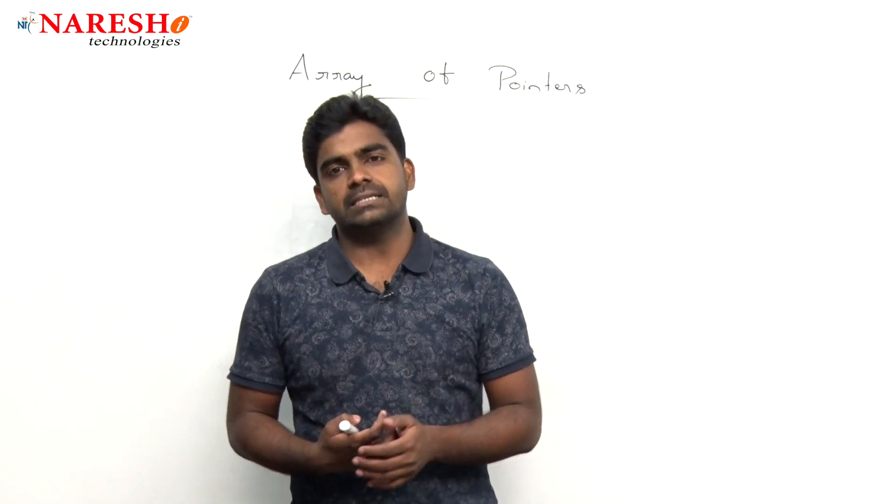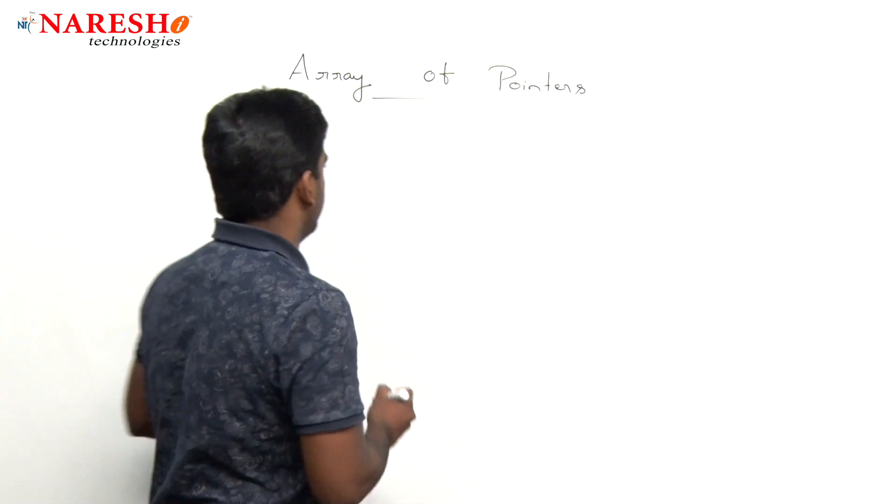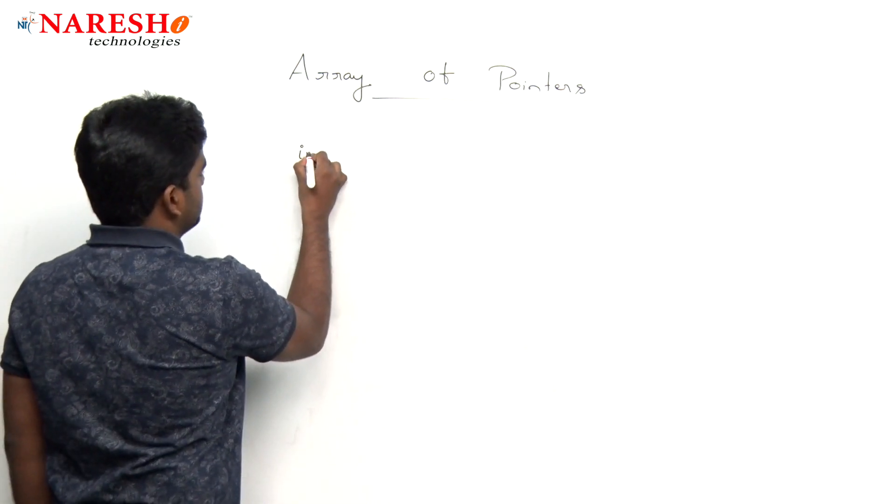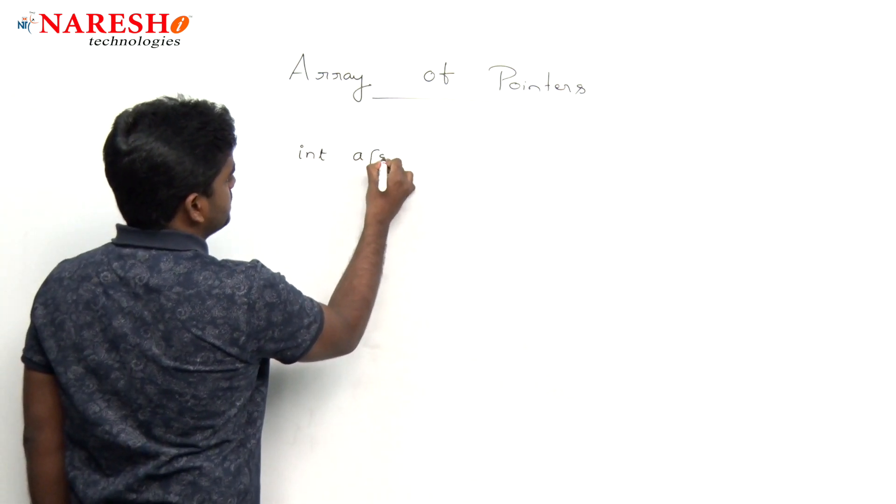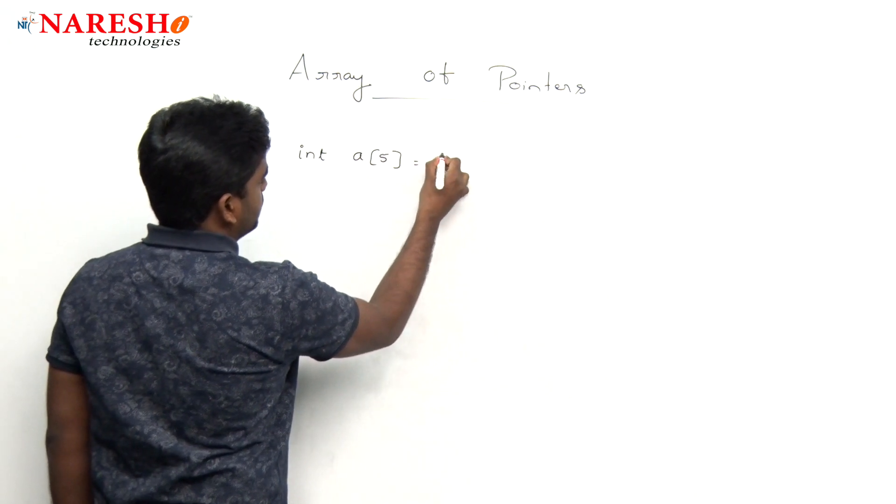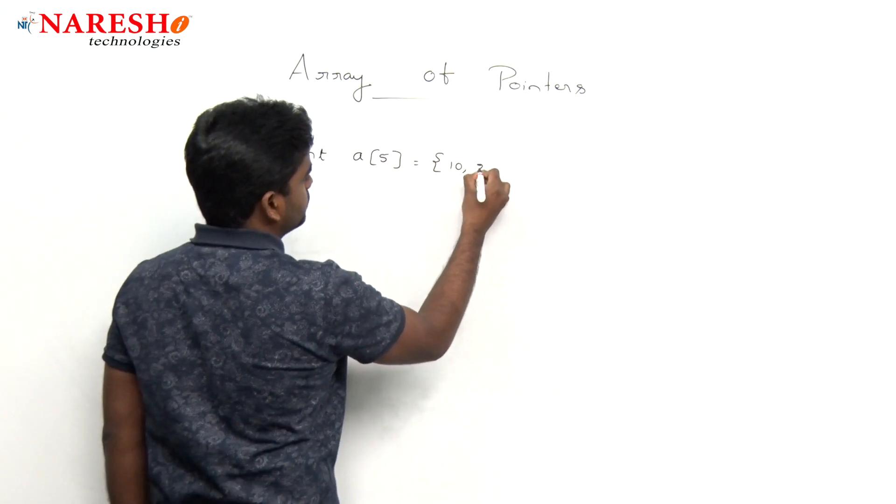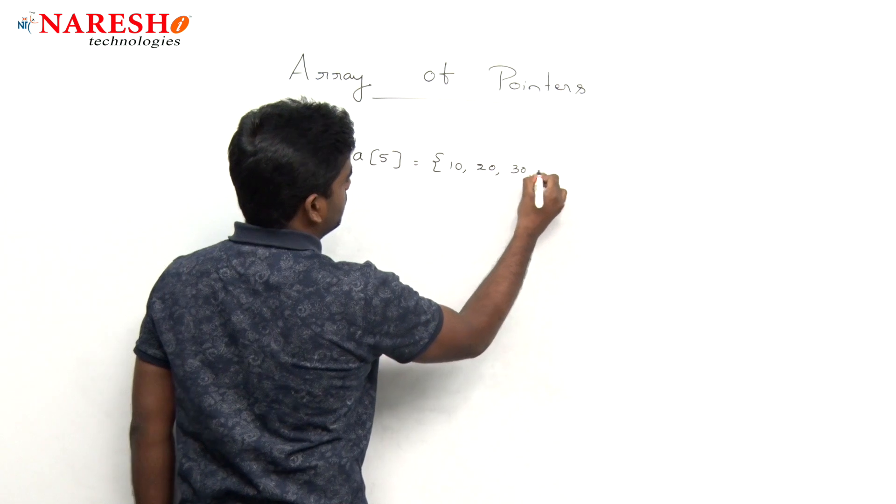Suppose if you take one integer pointer, first we are declaring one array, just a, and here its size we are taking five. We are assigning the values directly: 10, 20, 30,